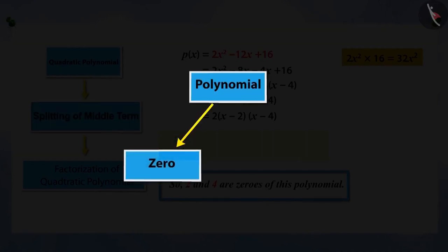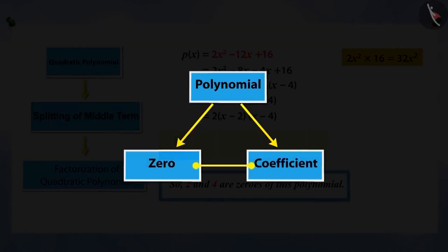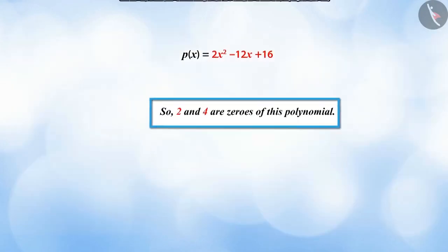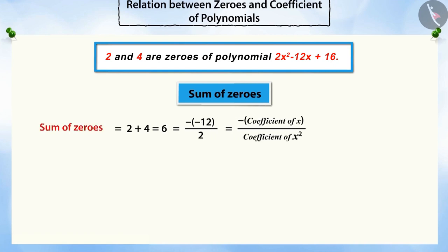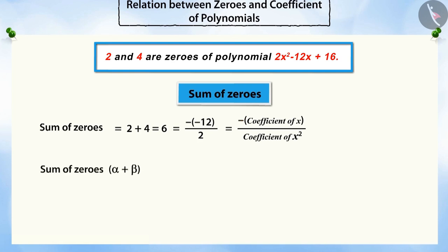Do you know that the zeros of a polynomial and its coefficients are related to each other? Let's see how. If we add the zeros, you will see that the sum of the zeros is equal to the negative ratio of the coefficient of X to the coefficient of X squared of the quadratic polynomial.